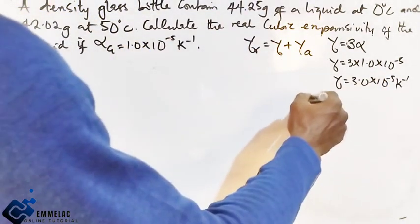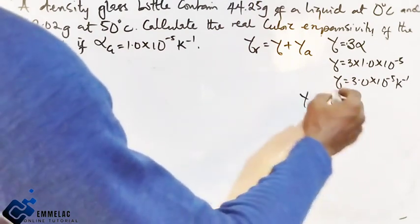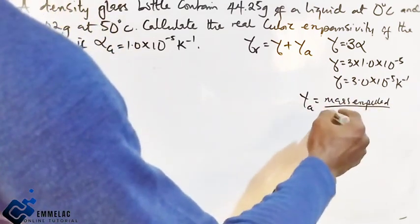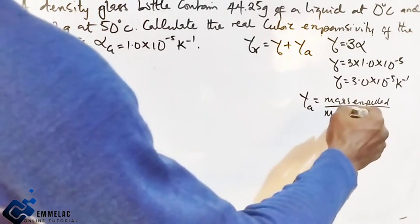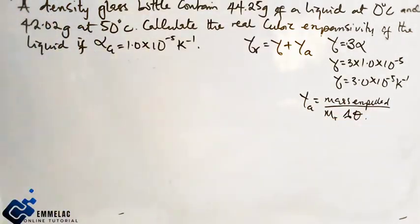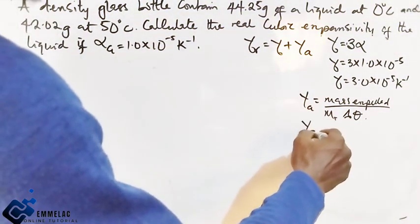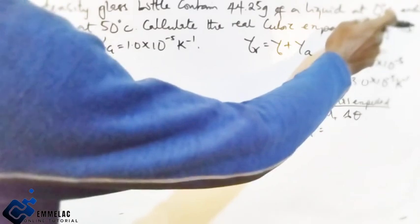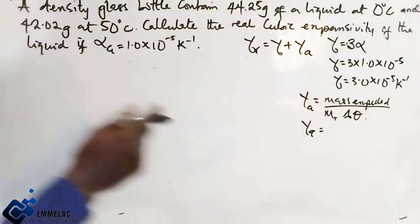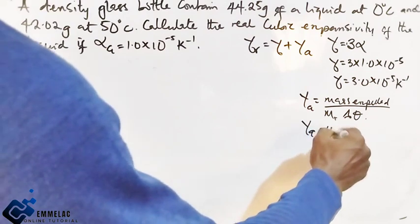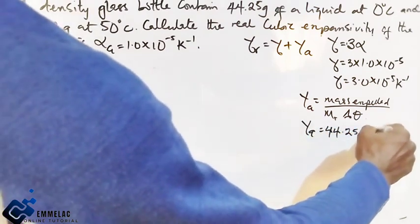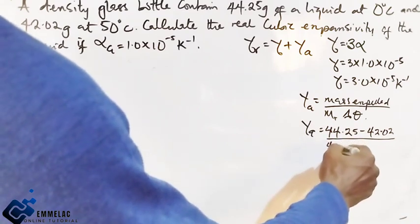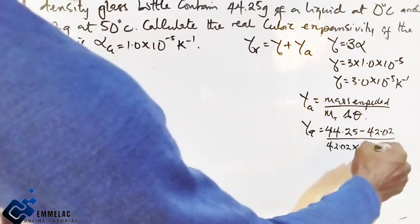Now let us look for the apparent cubic expansivity. This will be γ_a = mass expelled over mass remaining times change in temperature. Here we have the mass expelled will be the mass of water at 0°C minus mass at 50°C. So we have 44.25 minus 42.02, then over the mass remaining which is 42.02, times the temperature change.